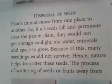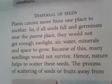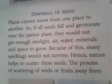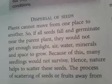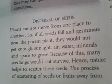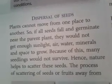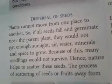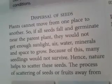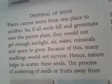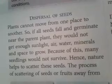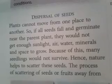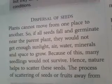Plants cannot move from one place to another — plants are immovable in nature, meaning they cannot move from one place to another place. So if all seeds fall and germinate near the parent plant, they would not get enough sunlight, air, water, minerals and space to grow.